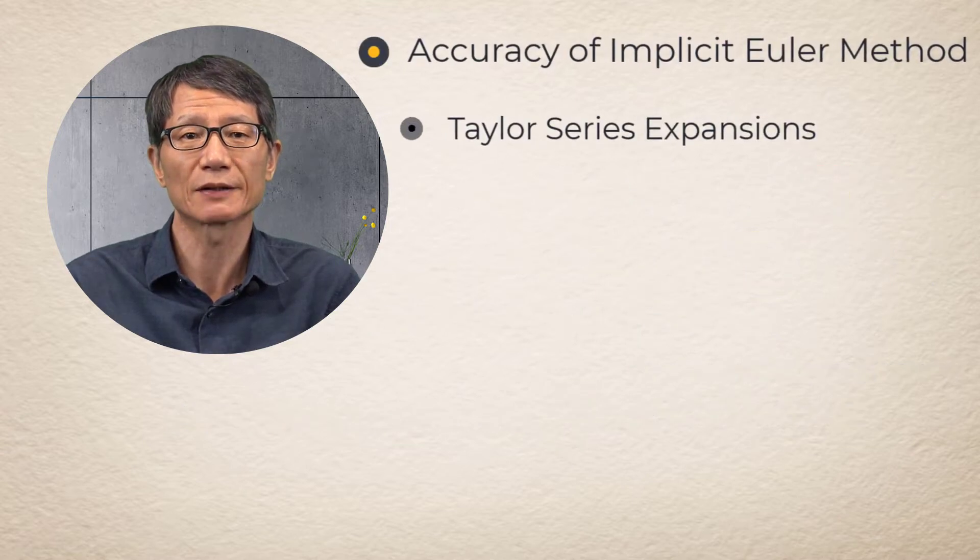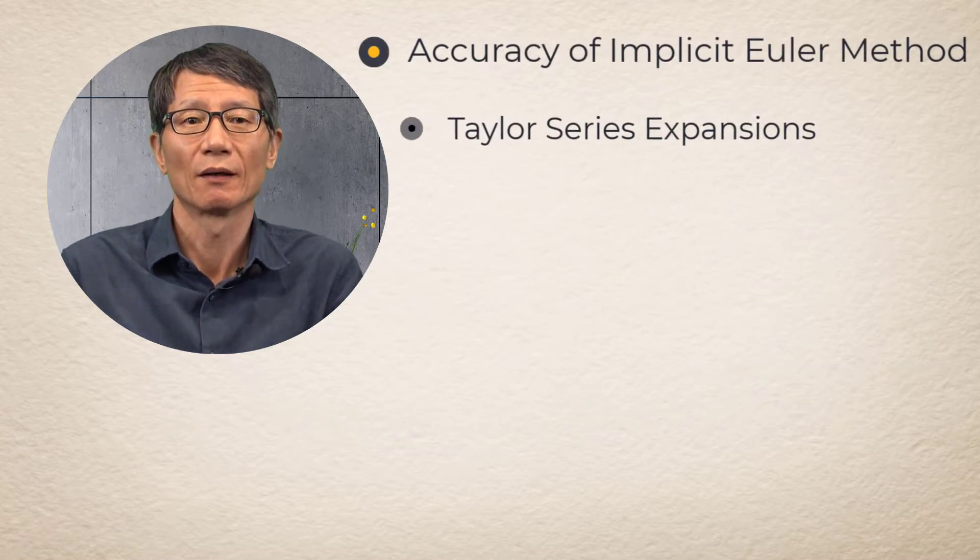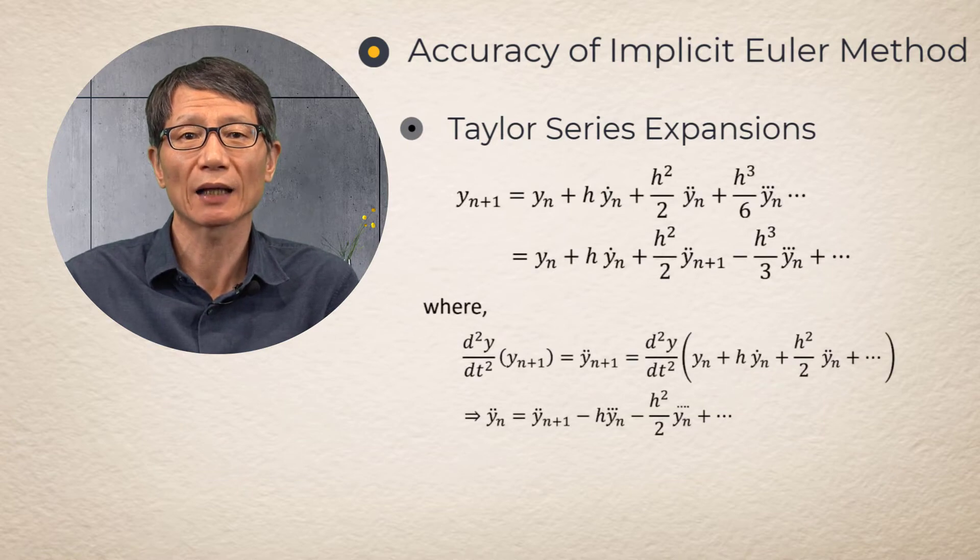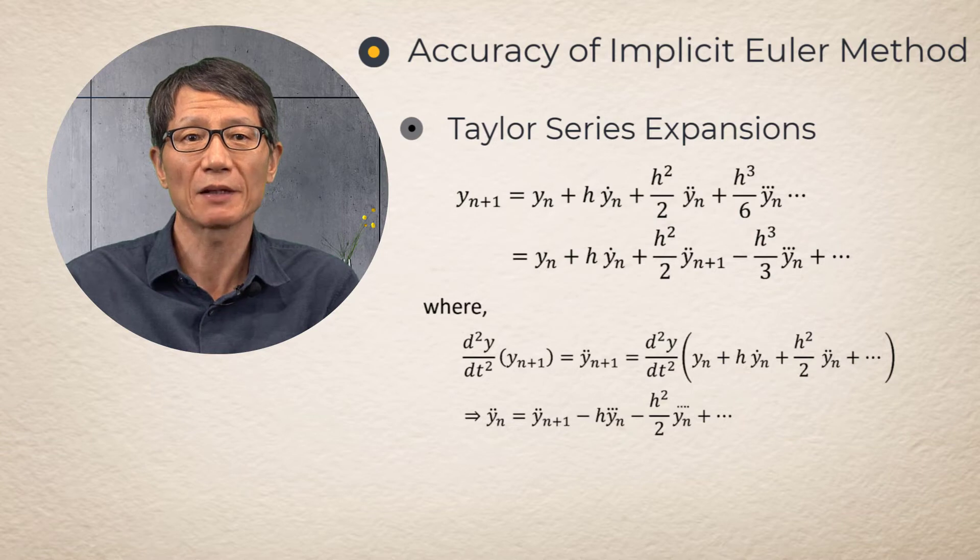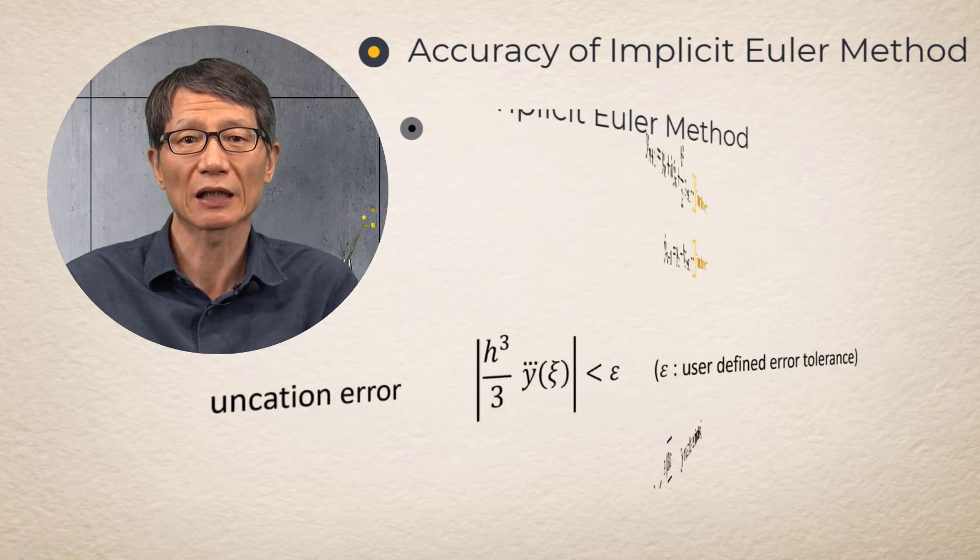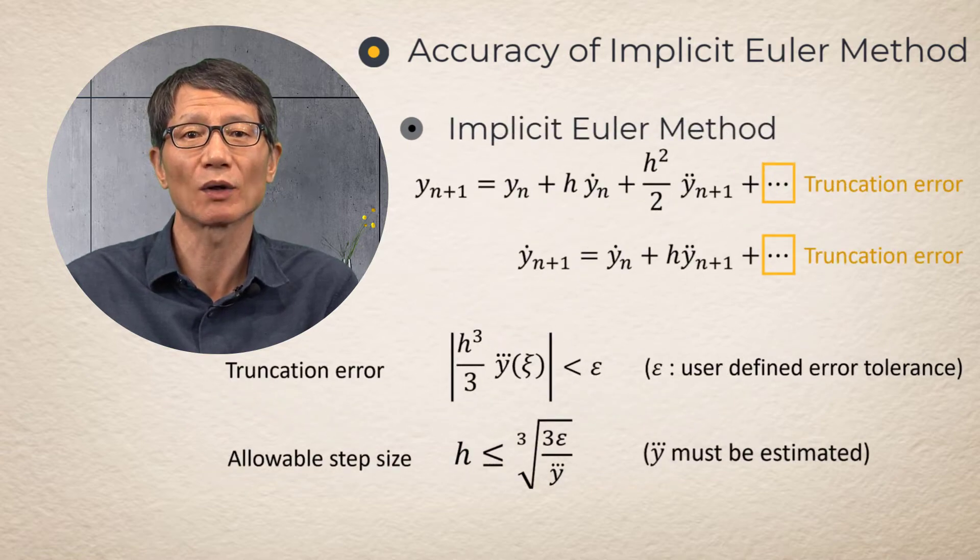Accuracy of Implicit Euler Method. Y_{n+1} dot, which is obtained from Taylor expansion, may be substituted into the Taylor expansion of Y_{n+1}. The resulting equation gives the Implicit Euler Method and its truncation error.